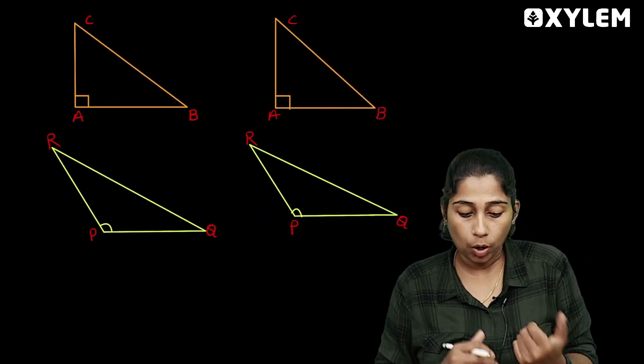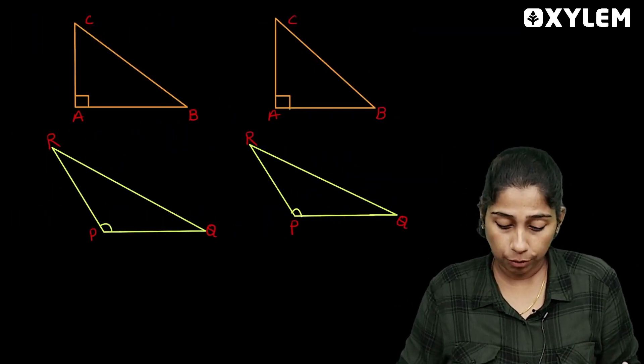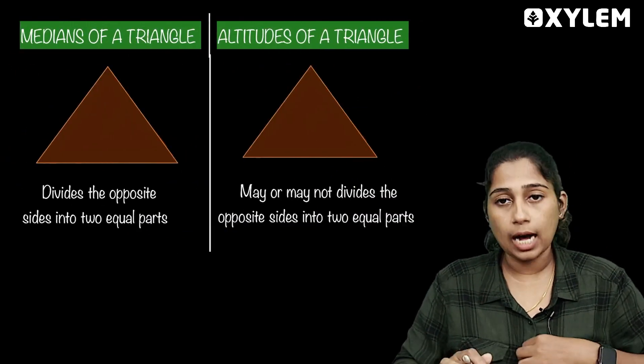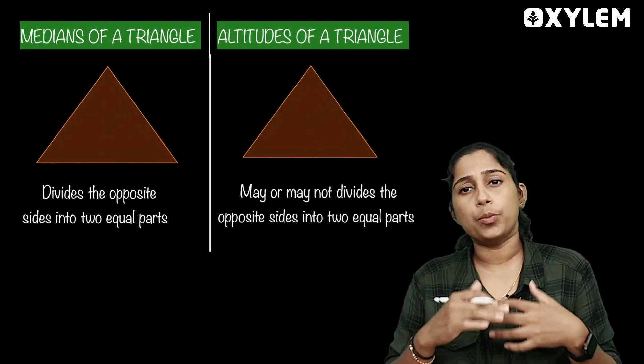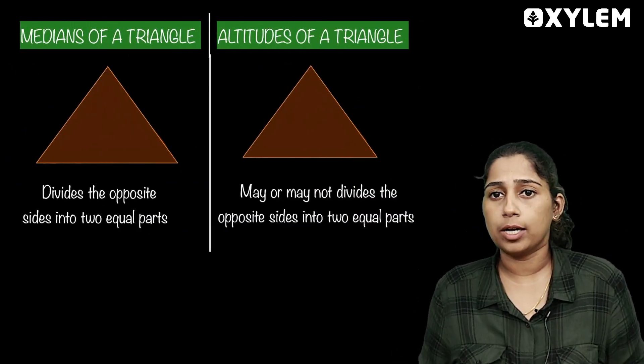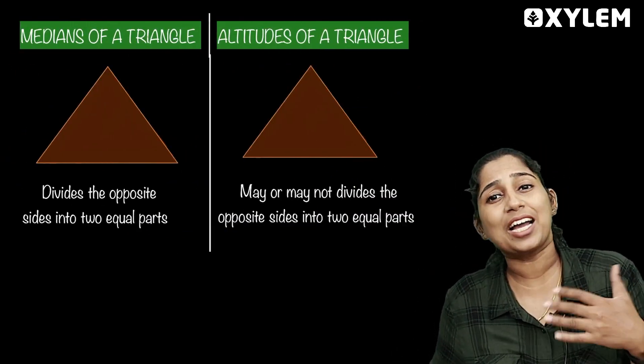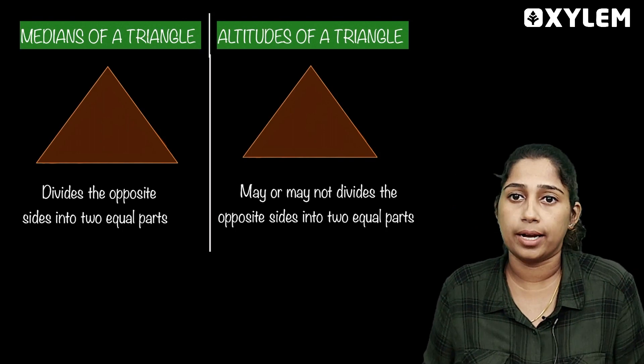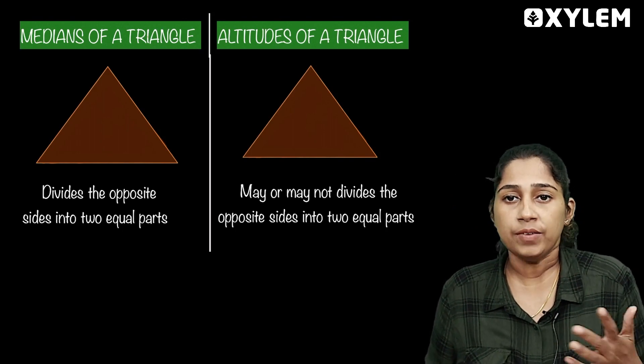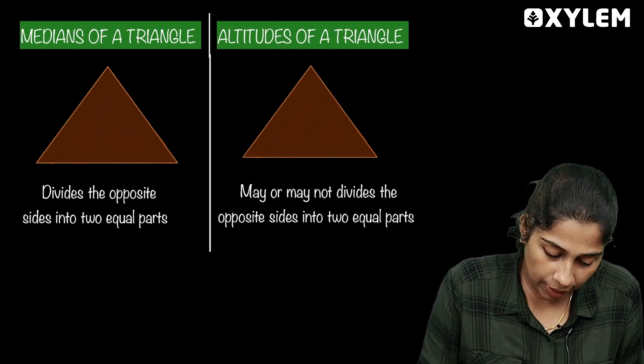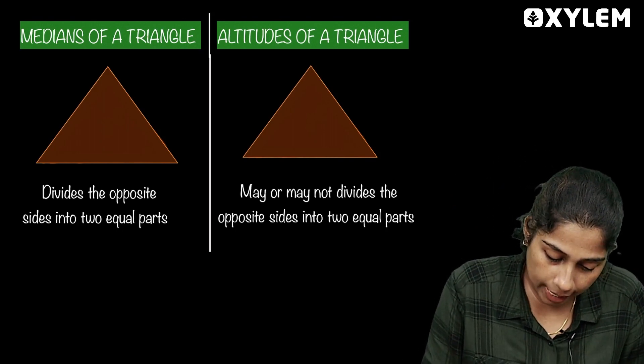These are different types of triangles. This is the second triangle. This is the acute angle triangle.